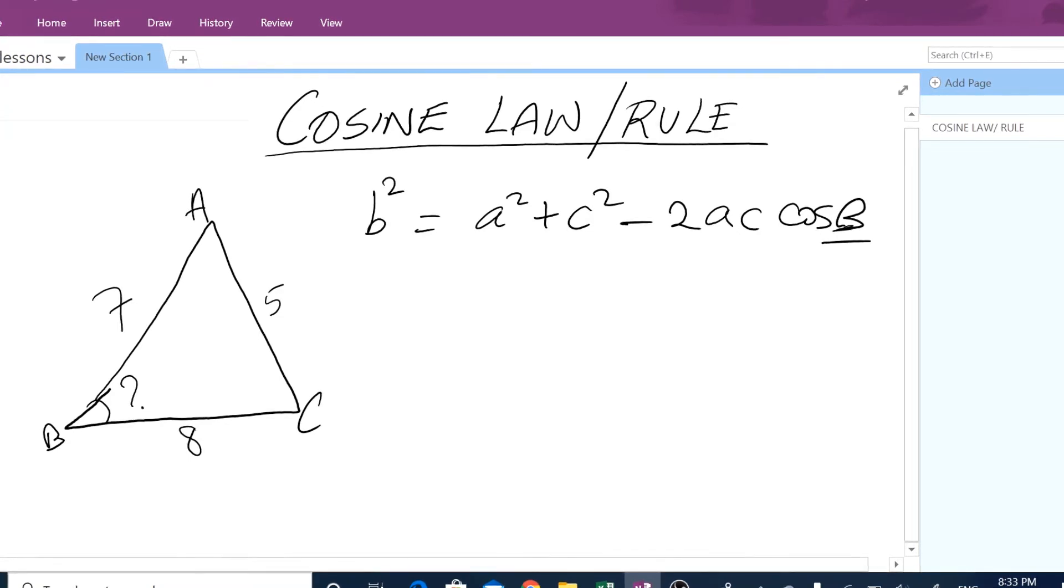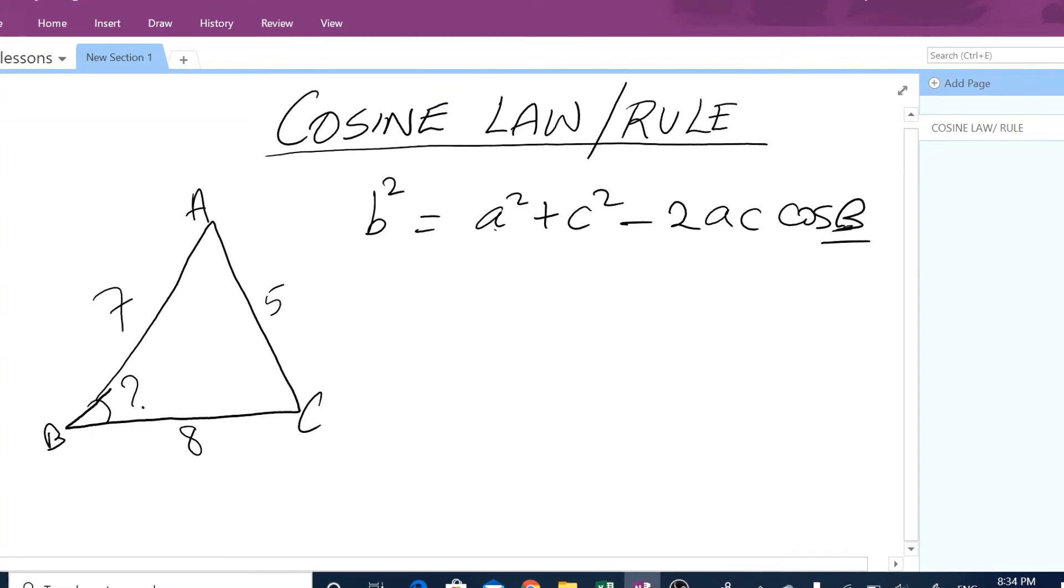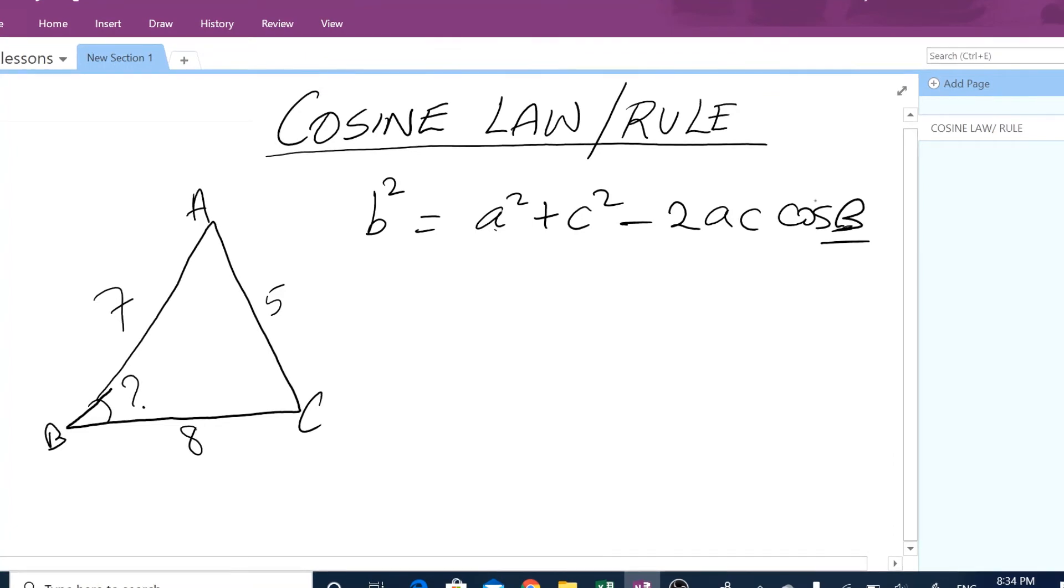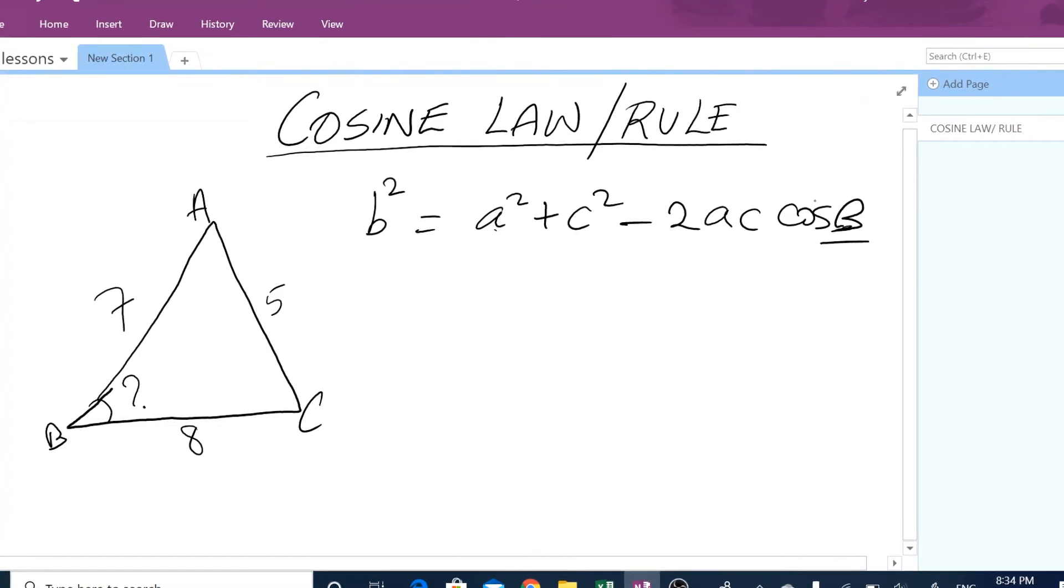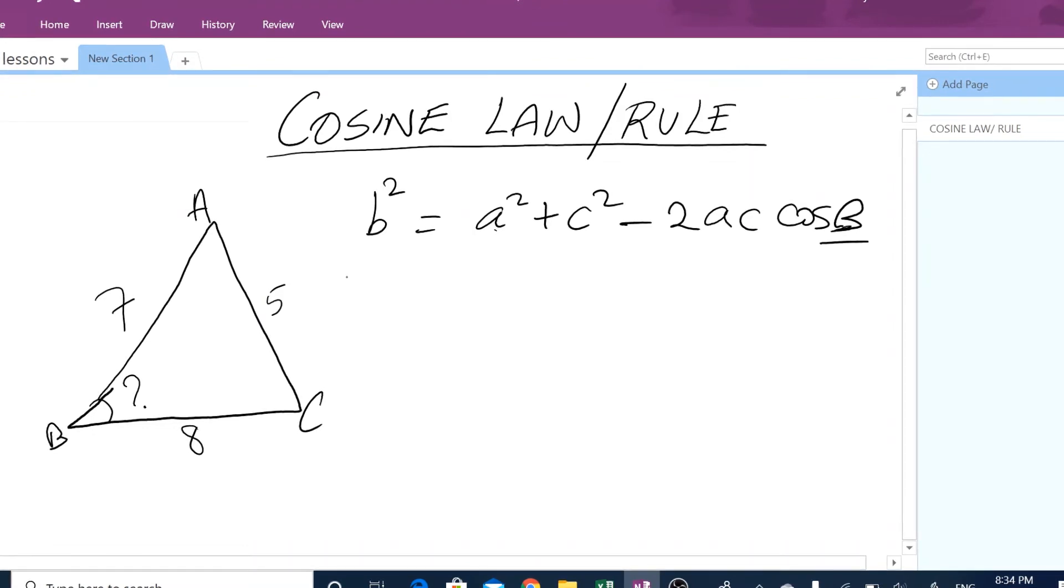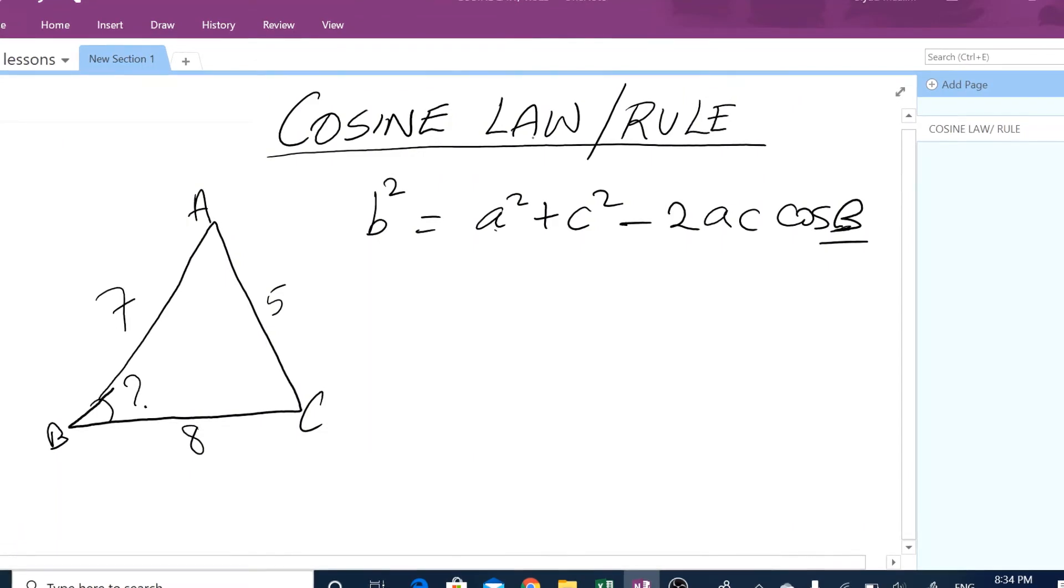So because we have b, we have a, we have c, the only thing that is missing is the angle. So we can use cosine rule. If you are given a triangle where you have all the sides but no angle, then you have to use cosine rule. Let's go ahead.